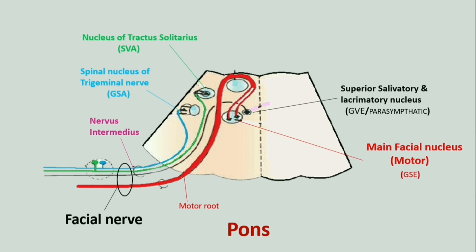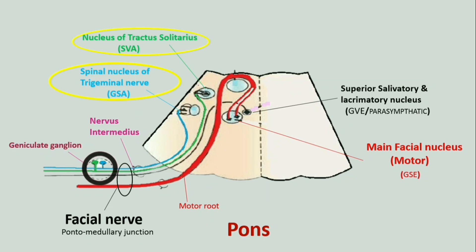The facial nerve emerges at the pontomedullary junction. The geniculate ganglion is an expansion of the sensory root of the facial nerve. Fibers from the nucleus of tractus solitarius and the spinal sensory nucleus synapse in this ganglion, while parasympathetic fibers pass through without relaying.